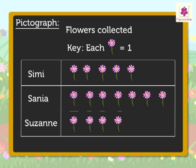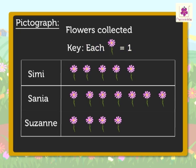Now let us see how we can read this pictograph of the flower farm example. The title 'Flowers Collected' tells us the pictograph is about the number of flowers collected. The labels give us the information of who collected the flowers. The key tells us that each flower picture is equal to 1 flower. Hence, from the pictograph we can say Simi collected 5 flowers, Sania collected 7 flowers, and Suzanne collected 4 flowers.